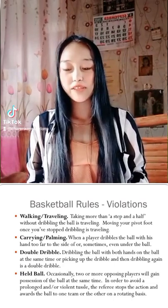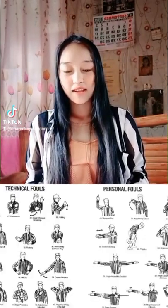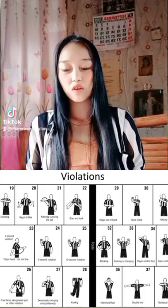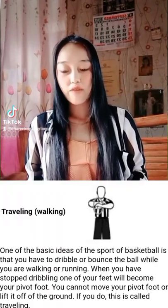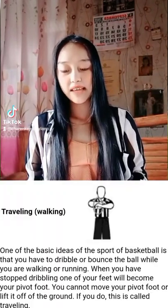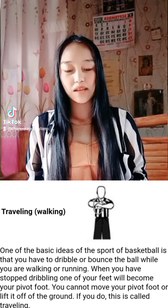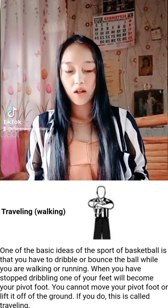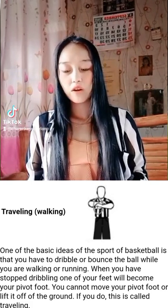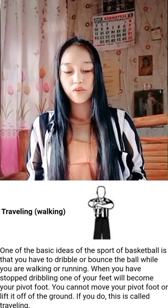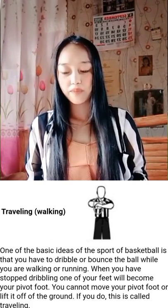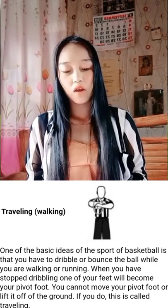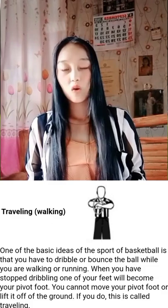I want to talk about basketball rules violations. Here is a list of descriptions of non-ball violations. In the game of basketball, the penalty for most violations is loss of possession of the ball. Traveling: one of the basic ideas of basketball is that you have to dribble the ball while you are walking or running. When you stop dribbling, one of your feet becomes your pivot foot. You cannot move your pivot foot or lift it off the ground. If you do, this is called traveling.